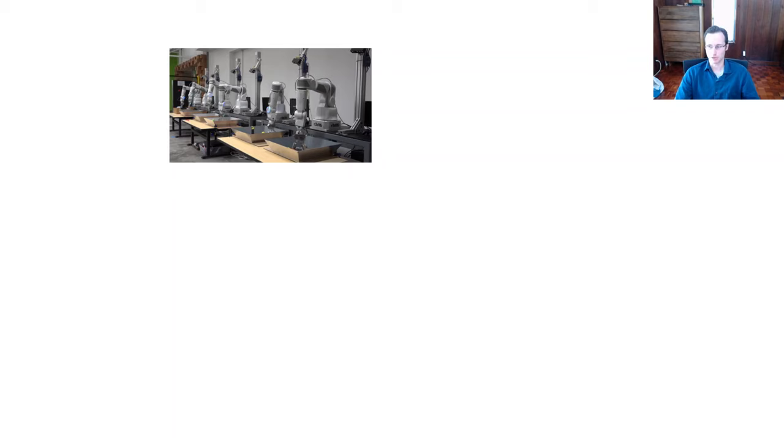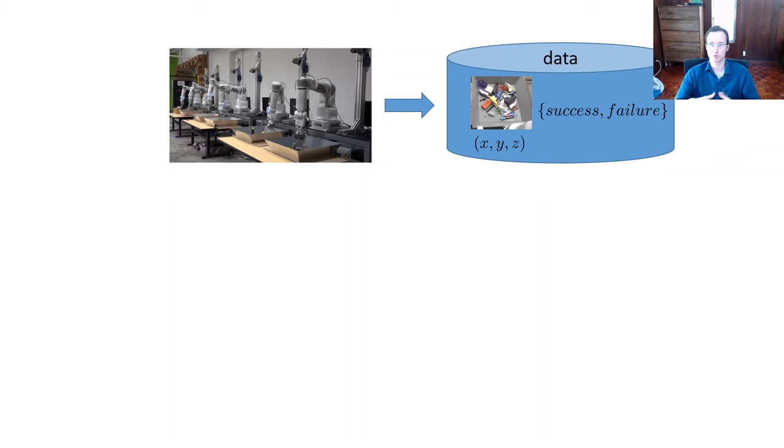So in a reinforcement learning setting, we wouldn't try to manually specify, in this case, where the robot should grasp objects. Instead, the machines themselves will collect the data set that doesn't necessarily consist of good examples, but examples that are labeled with our outcome. So it will be images, what the robot did, and whether that led to a failure or success. More generally, we would refer to this as a reward function. The robot would be rewarded for success and not for failure.